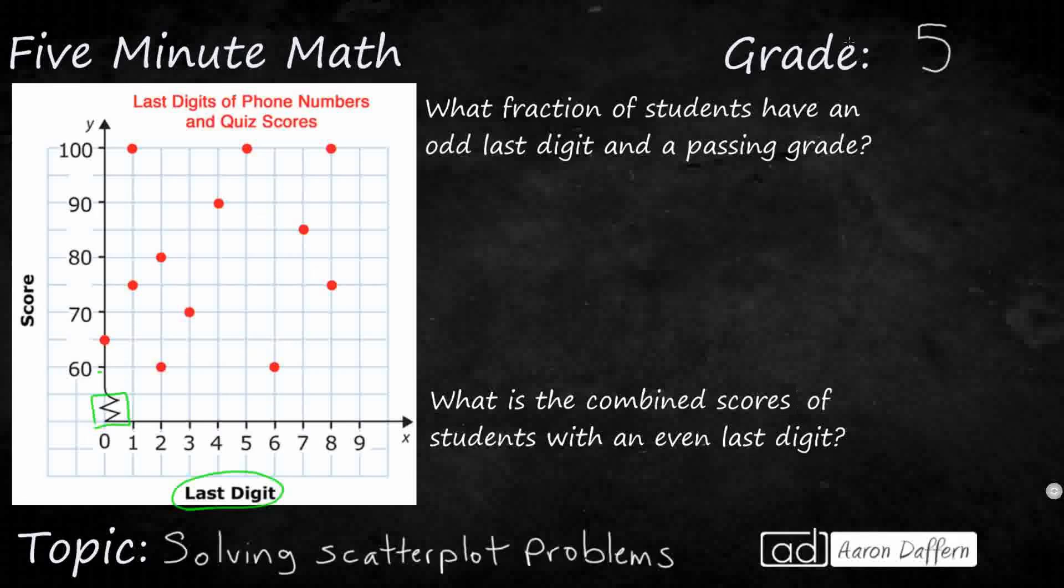So take a look at our first question. What fraction of students have an odd last digit and a passing grade? Okay, so this already tells us our answer is going to be a fraction. So odd last digit, that's even and odd. Let's go ahead and circle our odd last digits.